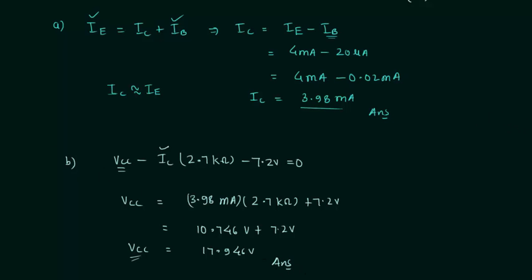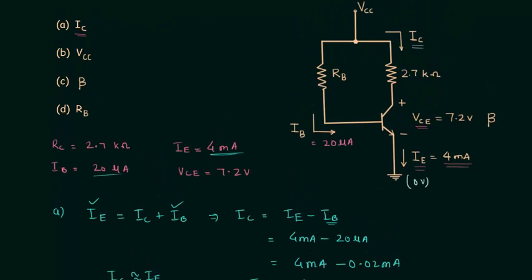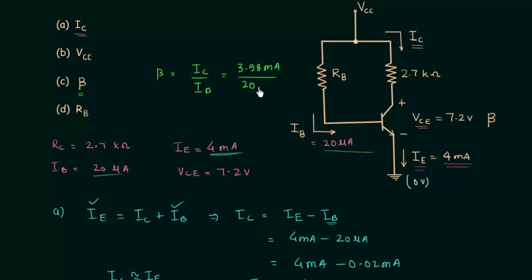Now we will solve Part C, in which we have to calculate the value of β. Beta equals IC the output current divided by IB the input current. IC equals 3.98 milliamps and IB equals 20 microamps, so β equals 199. This is the answer to Part C.